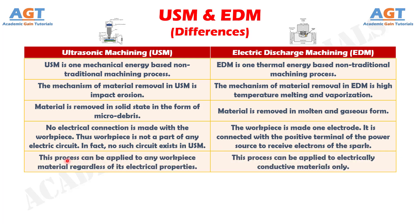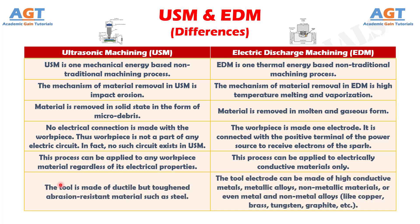Difference number 5: Ultrasonic machining process can be applied to any workpiece material regardless of its electrical properties, whereas electric discharge machining process can be applied to electrically conductive materials only. Difference number 6: In ultrasonic machining, the tool is made of ductile but toughened abrasion-resistant materials such as steel, whereas in electric discharge machining, the tool electrode can be made of high conductive metals, metallic alloys, non-metallic materials, or even metal and non-metal alloys, like copper, brass, tungsten, graphite, etc.